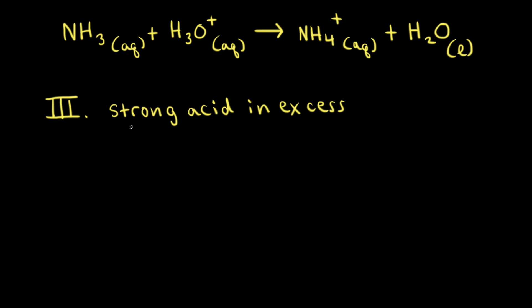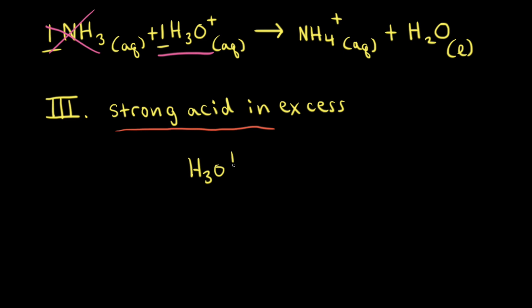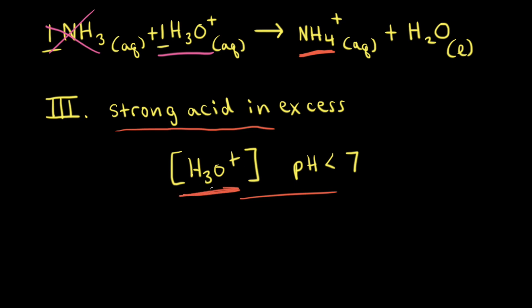For the third situation, the strong acid is in excess. Since the mole ratio is one to one, all of the weak base will be used up and we'll have excess strong acid remaining. Therefore, there will be a concentration of hydronium ions in solution, making the resulting solution acidic — pH less than 7 at 25°C. We can calculate the actual pH using a strong acid pH calculation. While the ammonium cation can also act as a weak acid and slightly increase hydronium ion concentration, that increase is negligible compared to the strong acid contribution, so we don't need to account for it.